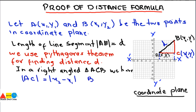For the right-angle triangle, we must know both AC and BC so that we can find the hypotenuse AB. BC can be found similarly. In BC, the x-coordinate is x2, but the y values are different. So we take BC as y2 minus y1.